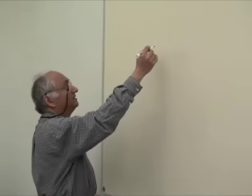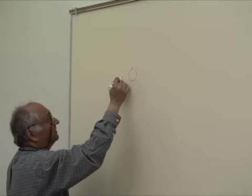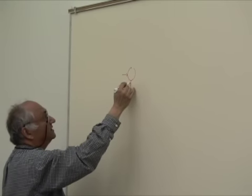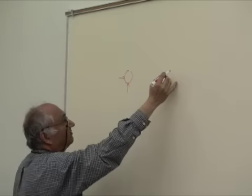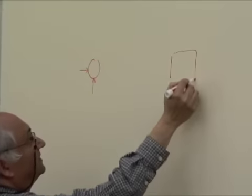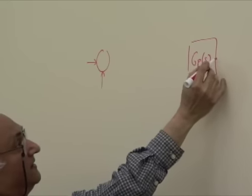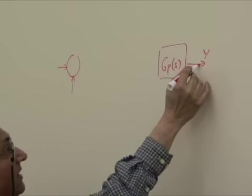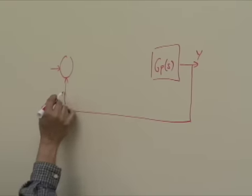This is a demo of a digital control system for the WMU course ECE 5700. What we have is a basic control system which has an error measurement here. There's a plant which we show as GP of S and its output is Y which is fed back here.